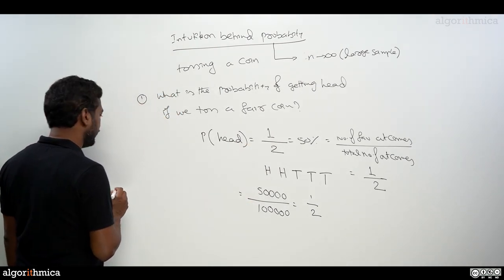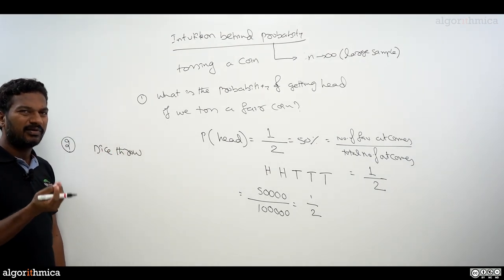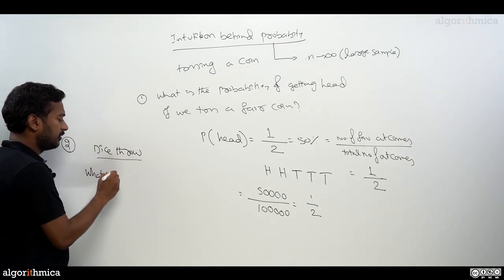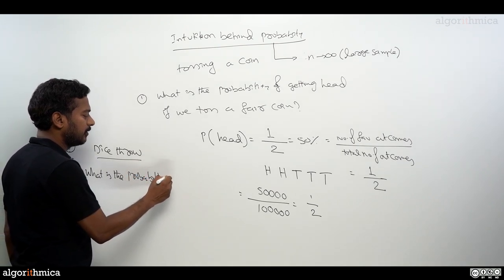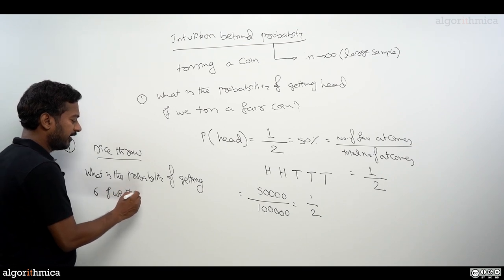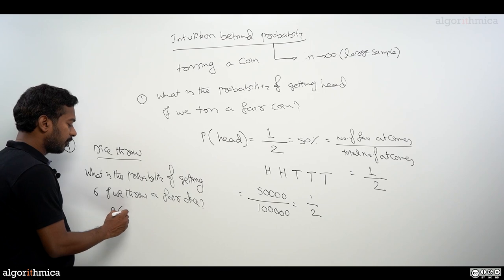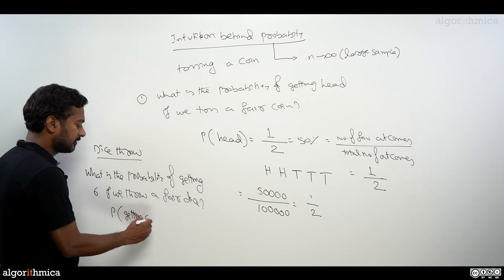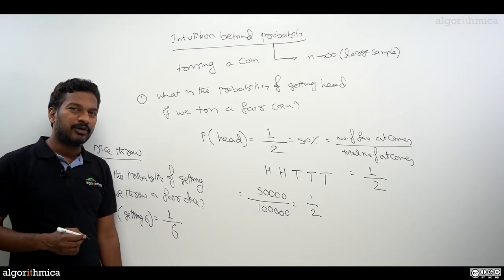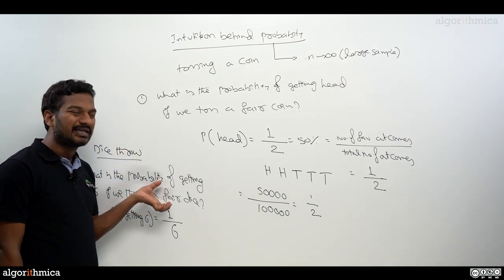Let me do one more experiment to give you clarity. This time I take a dice throw — this is our random experiment. Six outcomes are possible. What is the probability of getting a six if you throw a fair dice? With our theoretical definition, probability of getting six equals one out of six — total outcomes are six, favorable outcome is only one. But again, before giving one by six, the background work should be large number of experiments. Let's see whether the relative frequency of all six outcomes are going to be the same or not.